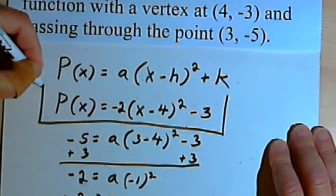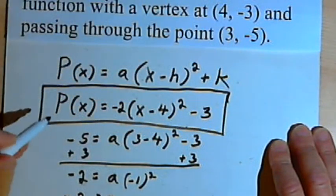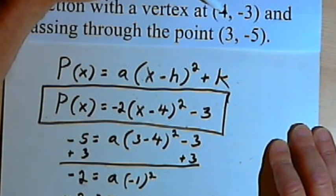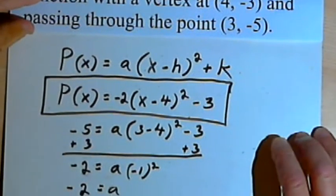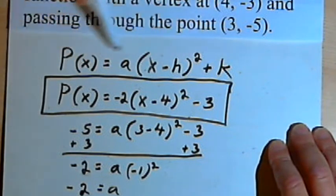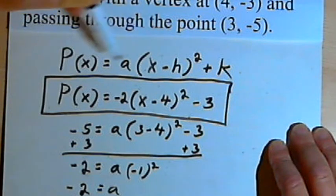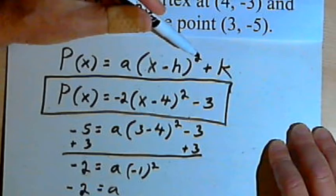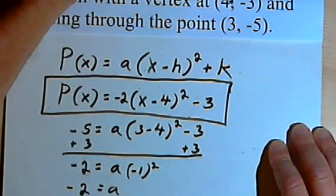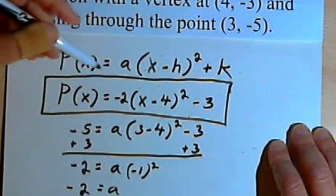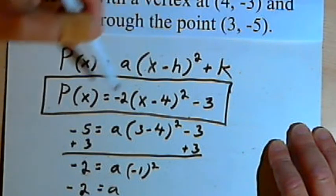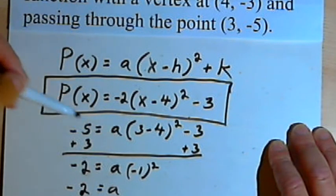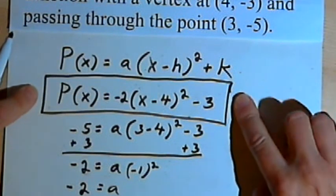And that's going to give me the equation for my quadratic function that has a vertex of 4, negative 3, and passing through the point 3, negative 5. Just to review quickly, all I did was write down the general formula for the vertex form: p of x equals a times x minus h squared plus k. Then I took the values for x and y at my vertex and plugged those in for h and k. Then I used the other point, 3, negative 5, to get x and y values to find the a. Once I've found a, I've basically got the formula for my quadratic function.